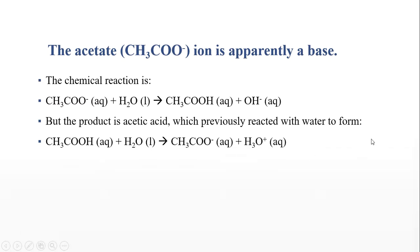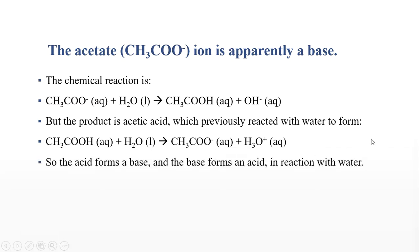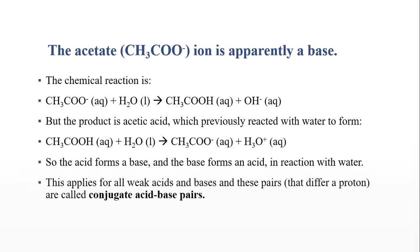So this is interesting: the weak acid in a reaction will form a base, and the base in a reaction will form an acid — and this is when they react with water. So for all weak acids and bases, these pairs are called conjugate acid-base pairs, because they are interconnected — one forms the other and then back again.